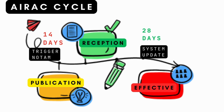AIRAC stands for Aeronautical Information Regulation and Control. There are three key dates: publication date, reception date, and effective date. Suppose new construction work is planned for an airport that will affect the closure of some portion of the operational area or cause temporary changes in an instrument approach procedure.